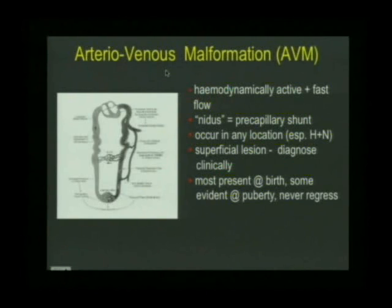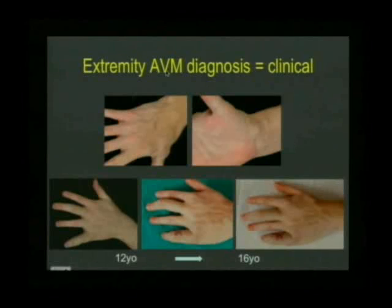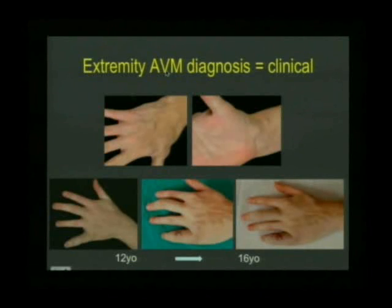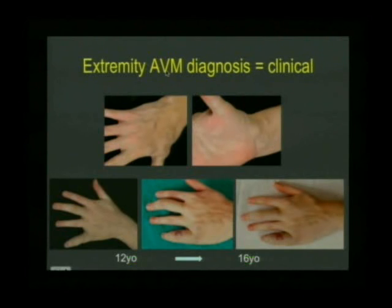AVMs present at birth, though sometimes they're not evidenced until puberty. You can diagnose them if they're in an extremity and superficial — the basic lesion is the nidus. Clinically we look for evidence of shunting effects: prominent veins, arterial aneurysms, and limb enlargement. In one girl at 12 years of age, the little finger and middle finger were slightly expanded, but over four years there was significant change, particularly to the little finger. Triggers that can worsen AVMs include puberty, pregnancy, and trauma — trauma to the affected part can cause significant deterioration and worse shunting.